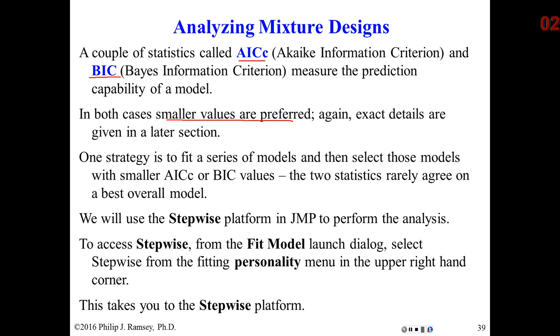So basically, if I look through a series of models, I'm looking for the ones where the AIC and the BIC are smallest compared to competing models. And generally, there is some computational differences. Again, I'm not going to go into details now in how these two statistics are computed. So frequently, they do not necessarily agree on a best model.